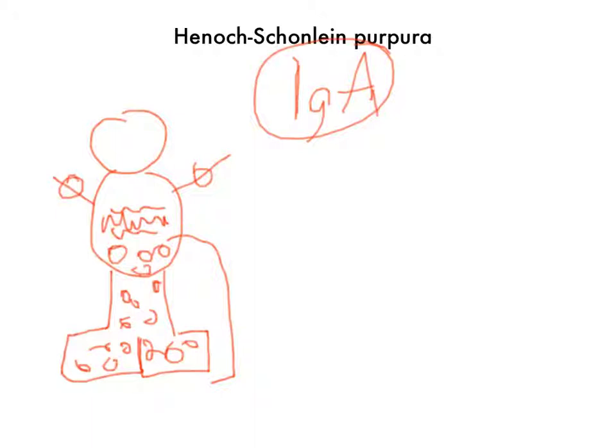You get palpable purpura because IgA is deposited in the skin — it's gravity dependent, which is why it's on the buttocks and legs. You get arthralgias because of IgA deposition in the joints. You get colicky abdominal pain because of IgA deposition in the mesenteric arteries. And you get nephropathy because of IgA deposition in the kidney tubules.